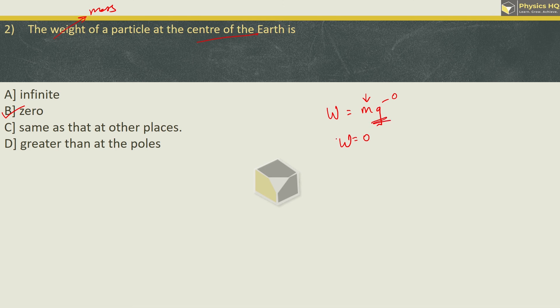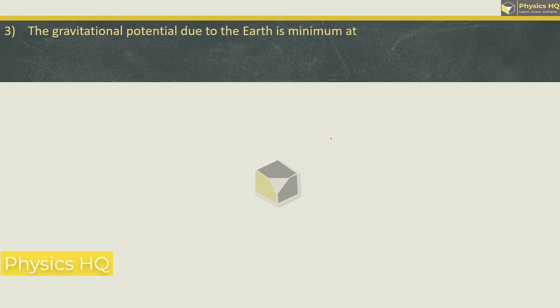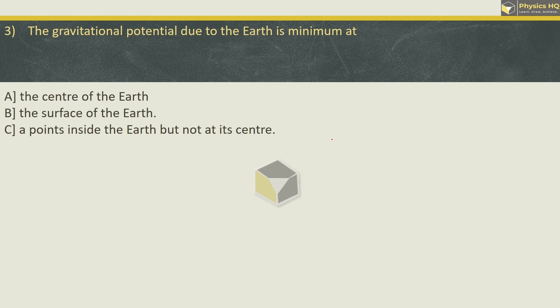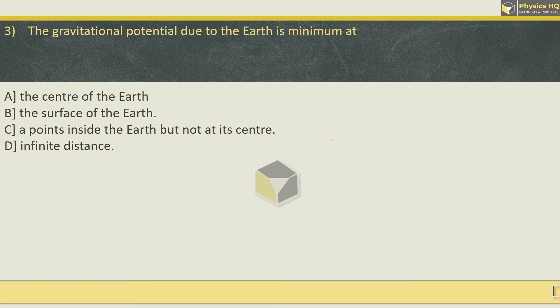Let us check out the next MCQ. The gravitational potential due to the Earth is minimum at center of the Earth, surface of the Earth, point inside the Earth but not at its center, or at an infinite distance.